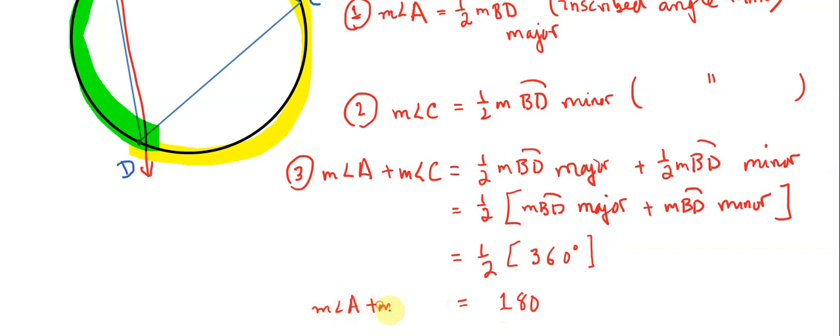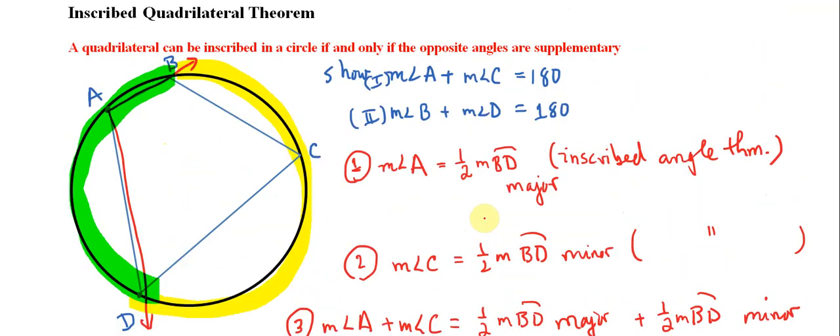So I'll write this down here, my final answer, that the measure of angle A plus the measure of angle C is in fact equal to 180 degrees, which is exactly what we set out to prove.